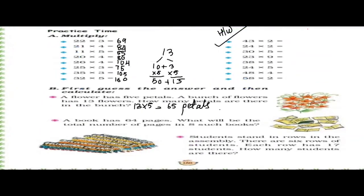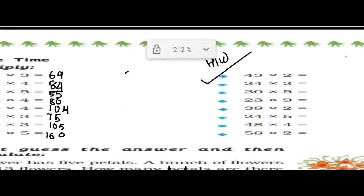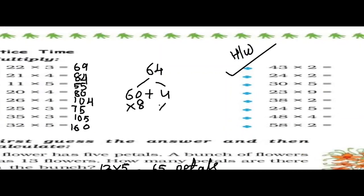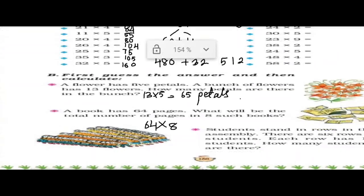Next — a book has 64 pages. What will be the total number of pages in 8 such books? You will multiply 64 into 8. Divide 64 into 60 plus 4 and multiply with 8. So 60 times 8 is 480, and 4 times 8 is 32. When you add 480 plus 32, you get 512. So 64 times 8 is 512 pages.